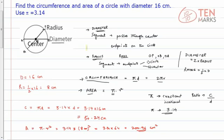Let's have a quick recap of what we learned. The diameter of a circle is a segment that passes through its center and has its endpoints on the circle — so AB is a diameter. A radius is a segment with one endpoint on the circle and one at the center — so OB and OA are radii. The diameter is always twice the radius, or equivalently, the radius is half the diameter. The circumference is given by pi D or 2 pi R, the area is given by pi times R squared, and pi is an irrational constant approximated as 3.14.